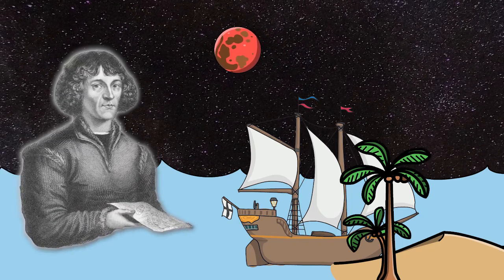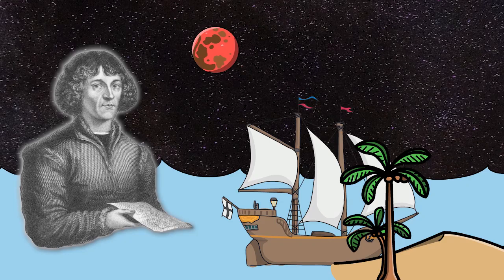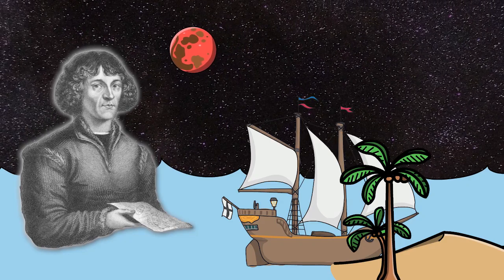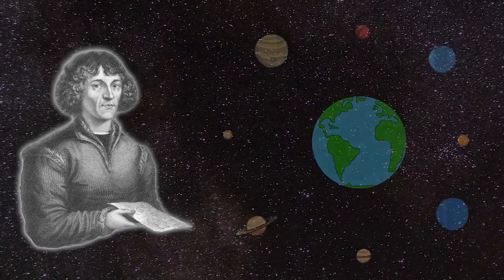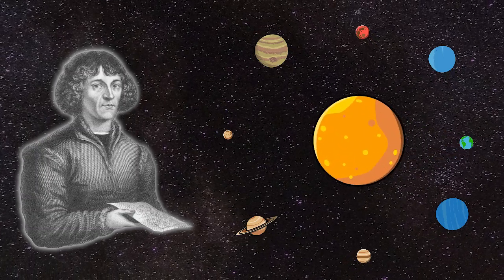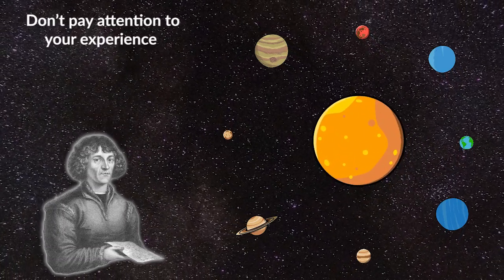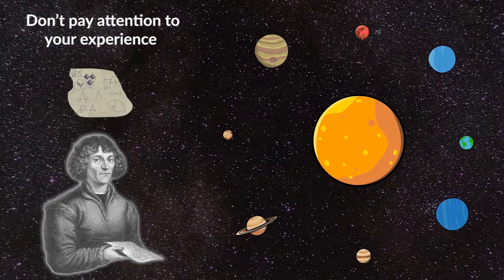Copernicus comes along and tells us how to solve problems like this. Pay close attention to the wording he uses. Copernicus says the math is better if you put the sun at the center. What he is saying is don't pay attention to your experience, pay attention to the math.